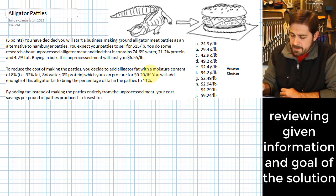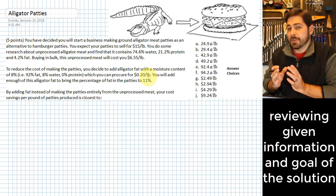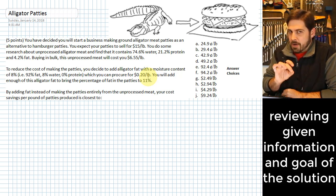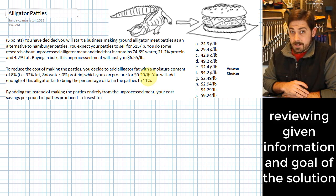So you figure out some things about that. You can get the 92% fat, 8% water version of it for $0.20 a pound. And you're going to add enough of that fat so that the percentage of fat in the patties goes to 11%. What you'd like to do is figure out how much can that save you in cost. Okay, so this is what we're going to do.